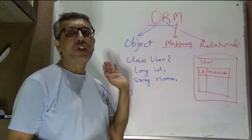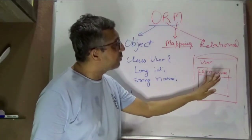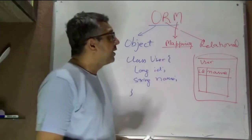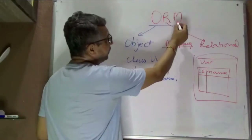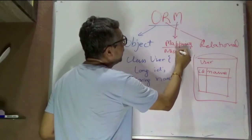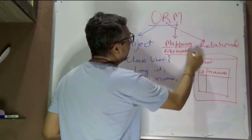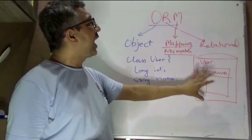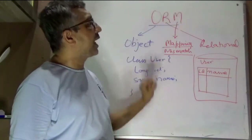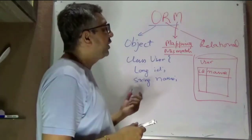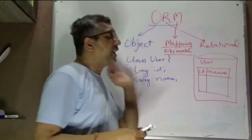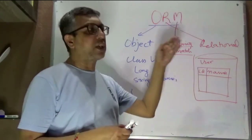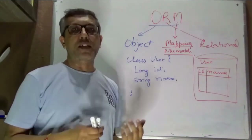This framework takes care of making sure the transformation from one world to another happens seamlessly. The M in ORM is also known as 'mismatch' — meaning there is a mismatch between the object world and the relational world. ORM frameworks help bridge that mismatch, letting you deal with tables and columns in the relational world, and classes and fields in the object world.